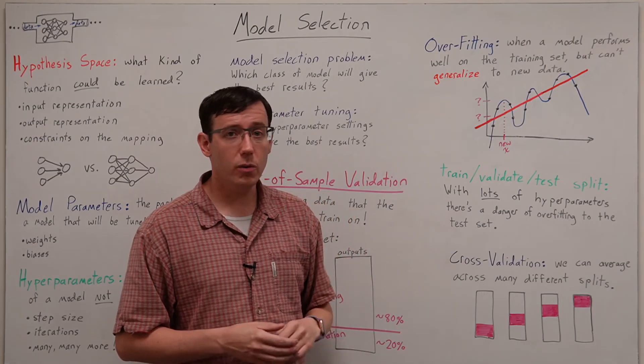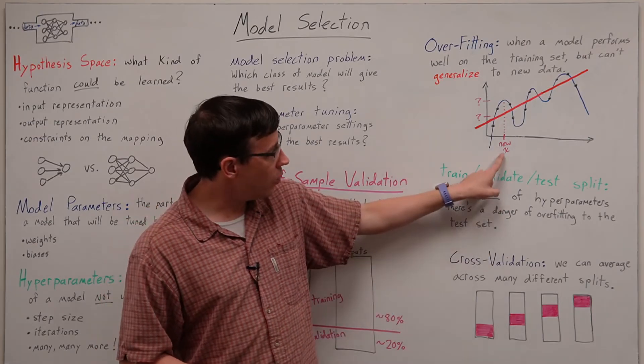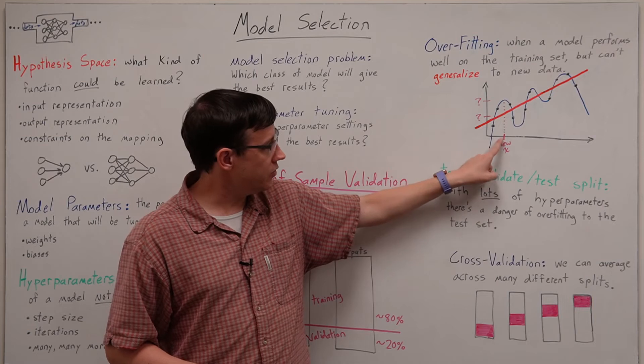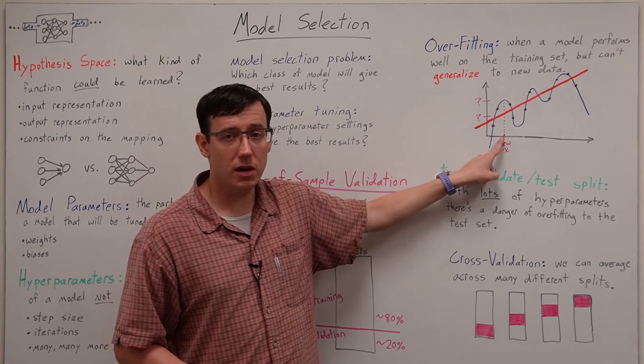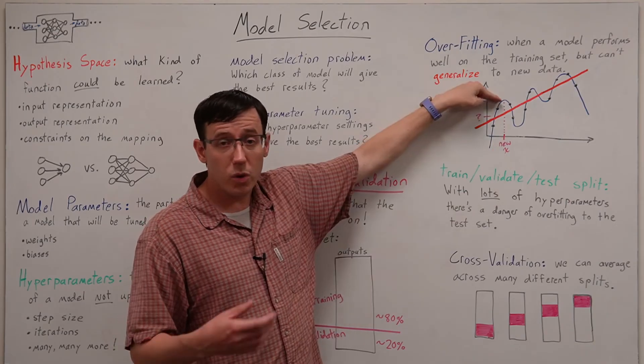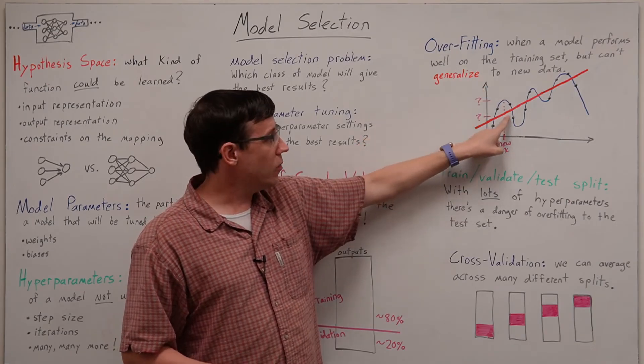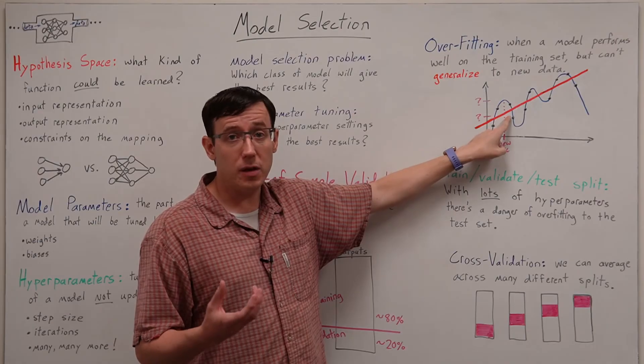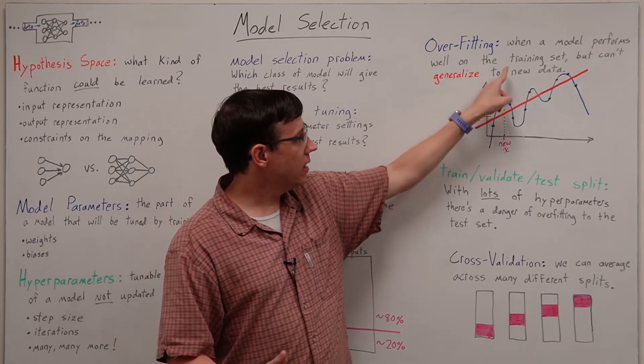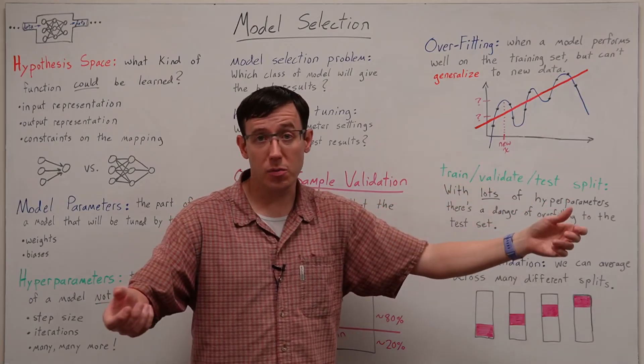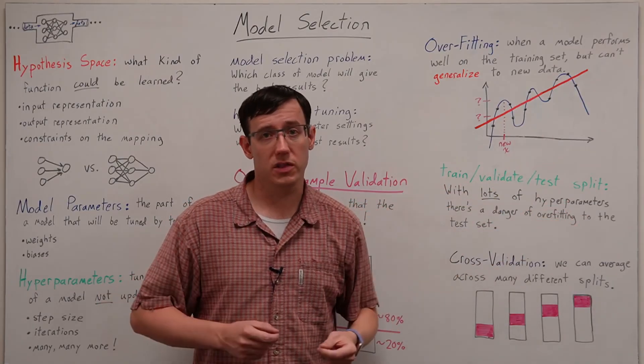But if we were to guess how well we think these models will generalize to a new data point that they haven't seen before, it seems more intuitive to me that the red model might actually be a better prediction than the blue model that has curved way beyond the points it's seen just to fit them exactly.